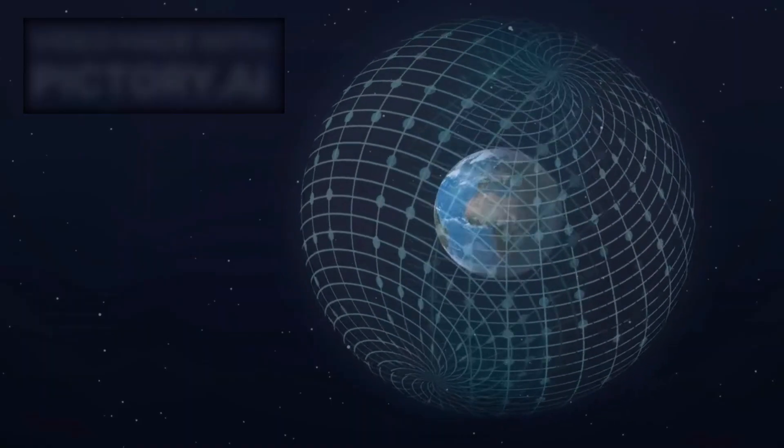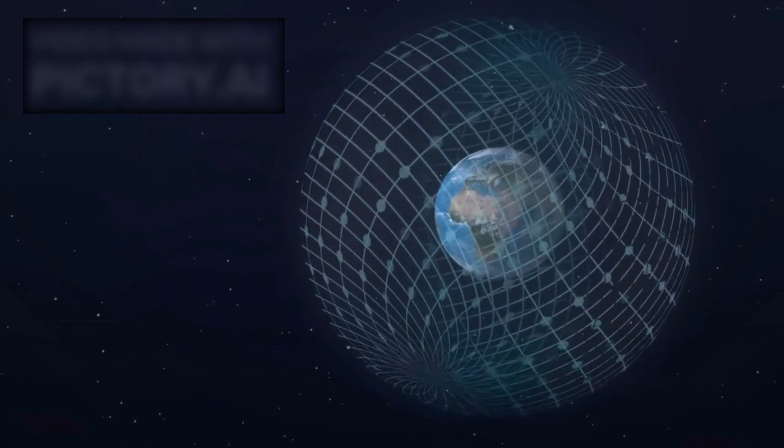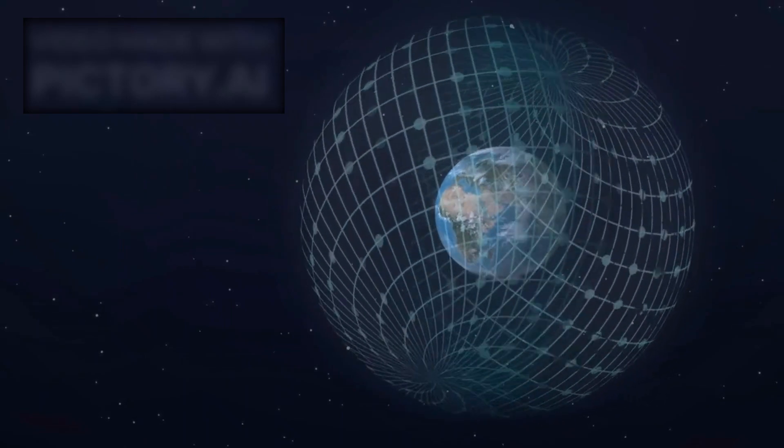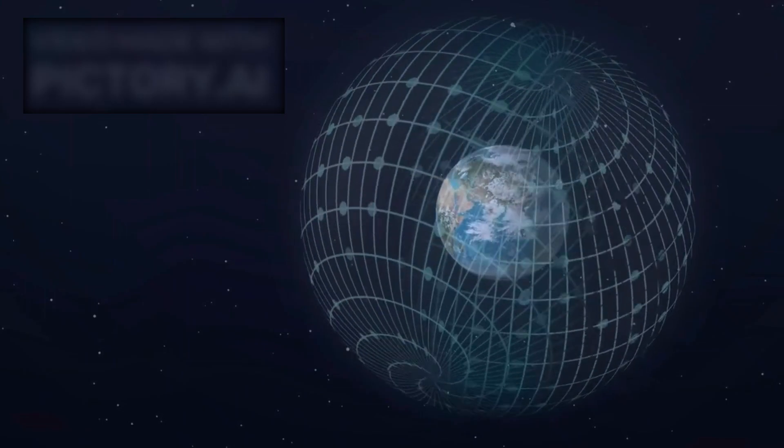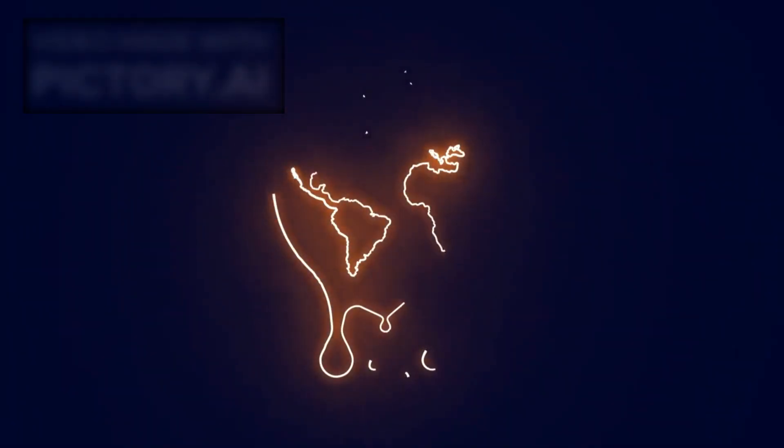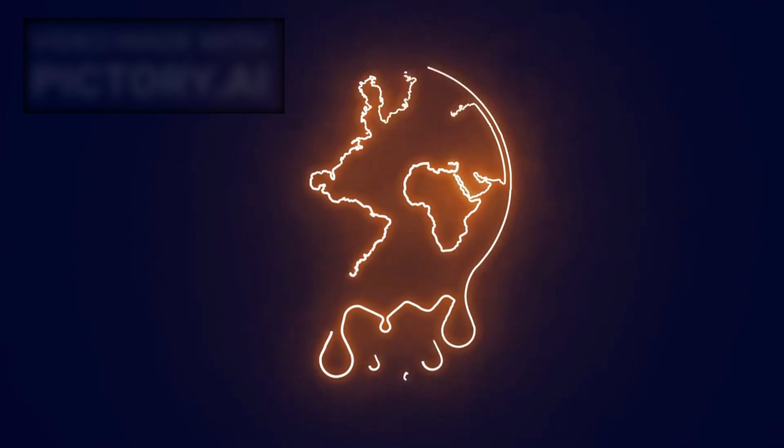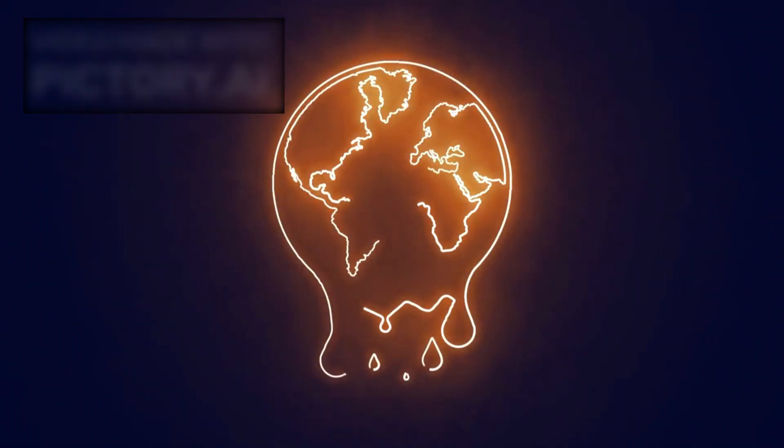If true, such a field could shield Pluto's atmosphere and subsurface ocean from harmful solar radiation, much like Earth's magnetic field protects our planet. This invisible force might also explain some of the unusual geological patterns and heat emissions observed across Pluto's surface.